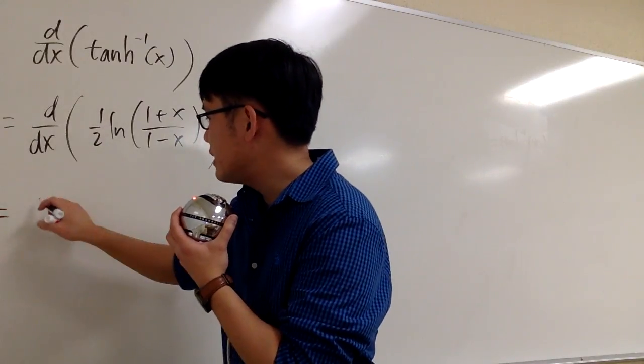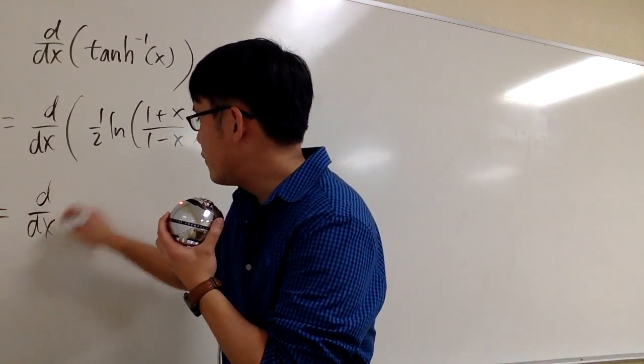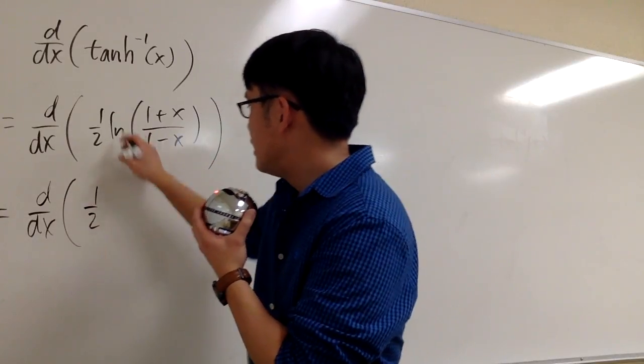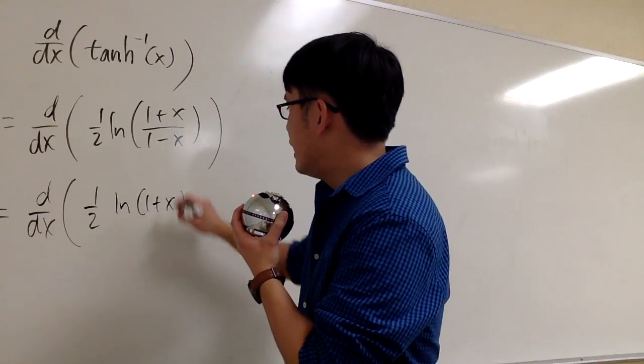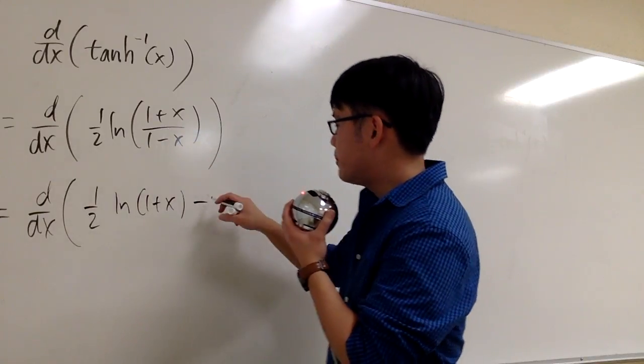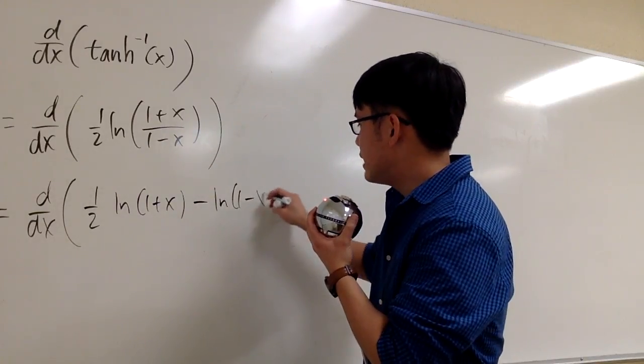So this is the same as asking to take the derivative of 1 half in the front, ln of the first thing, 1 plus x, and then minus the second part of the ln, 1 minus x, like that.